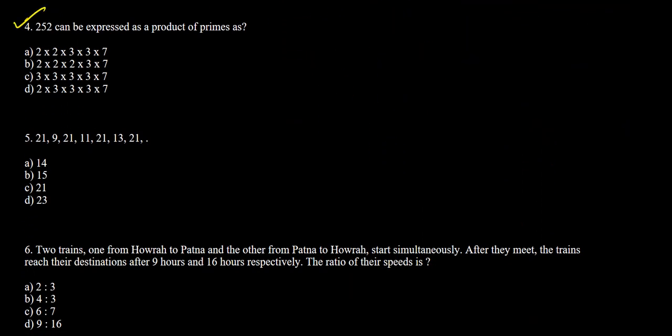Question 4: 252 can be expressed as a product of primes as which of the given options? We multiply each option's primes to see which gives 252. For option A: 2 × 2 × 3 × 3 × 7 = 4 × 3 = 12 × 3 = 36 × 7 = 252. Option A gives 252, so option A is the correct answer.